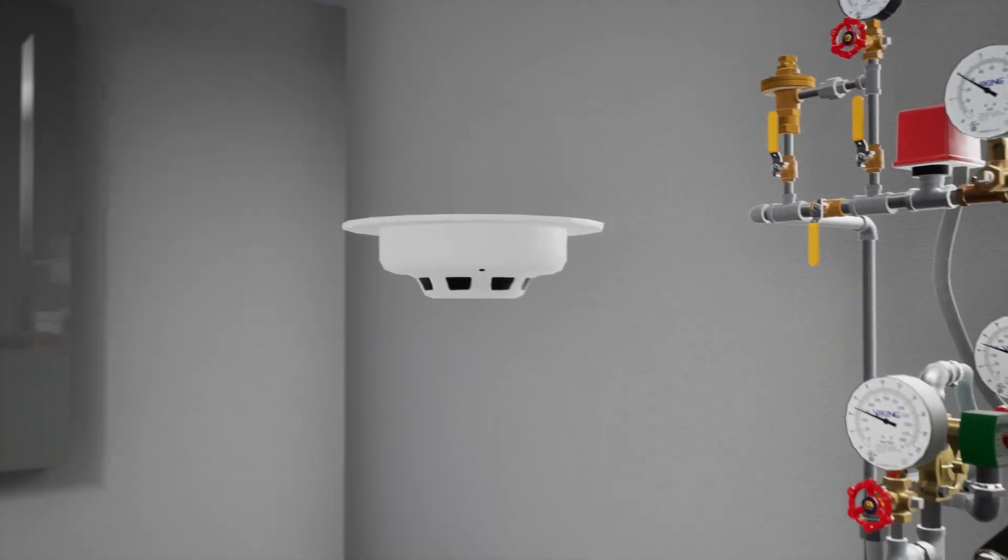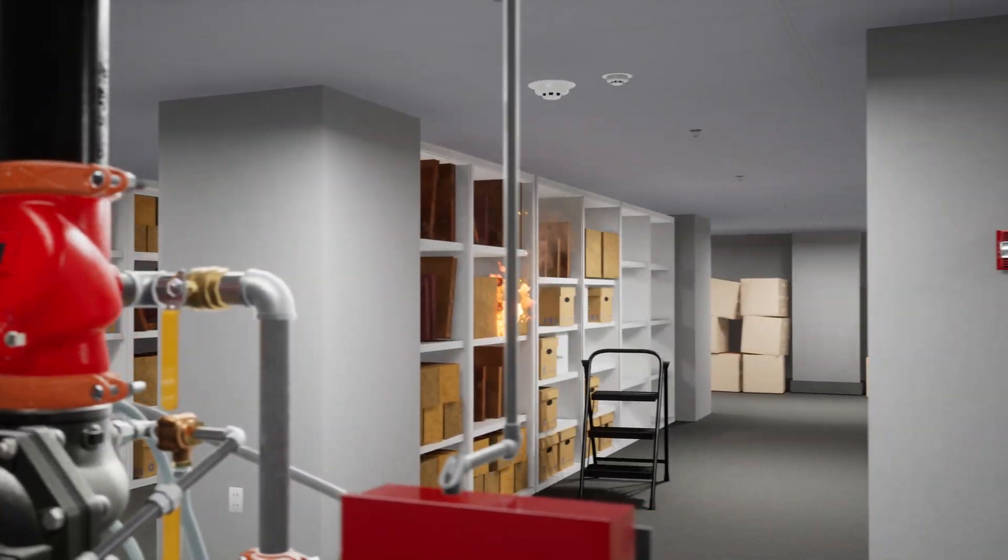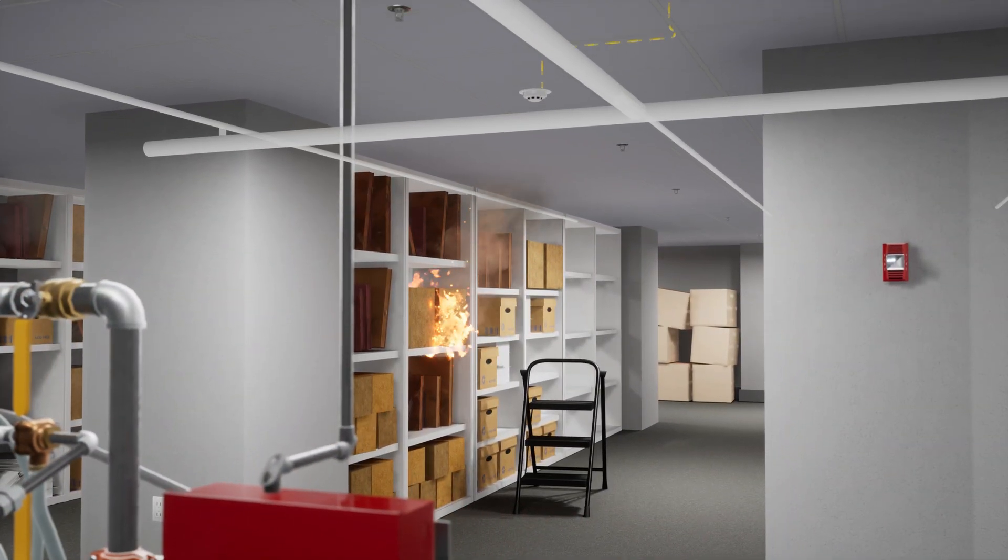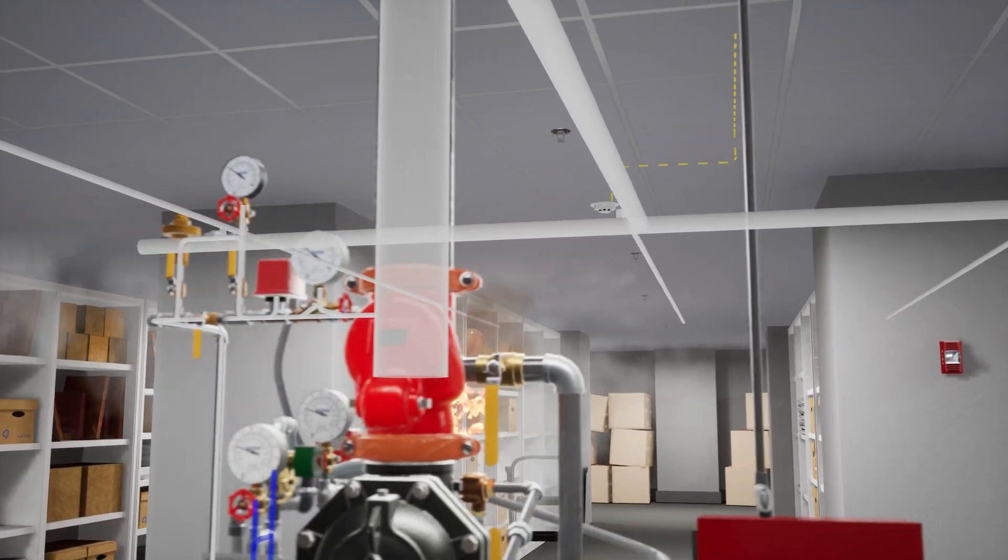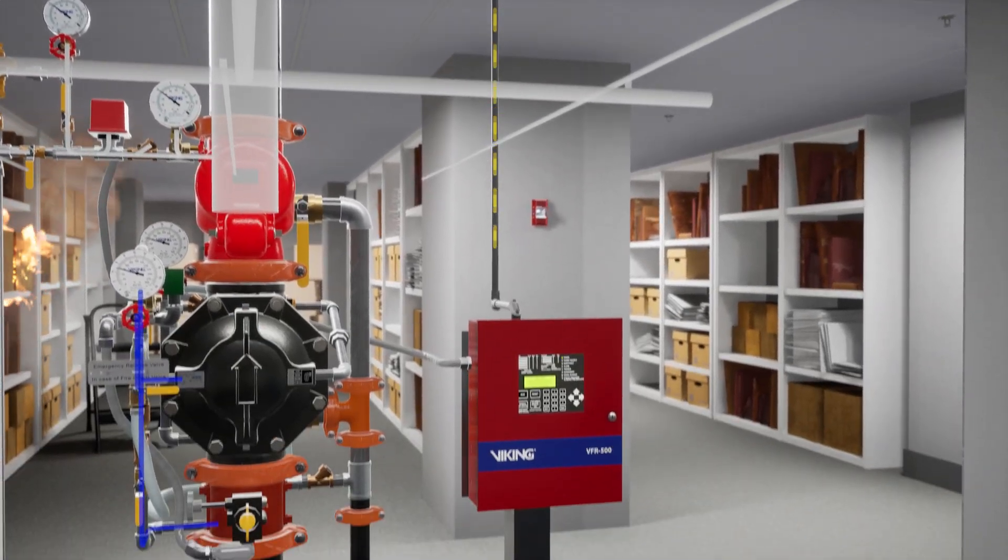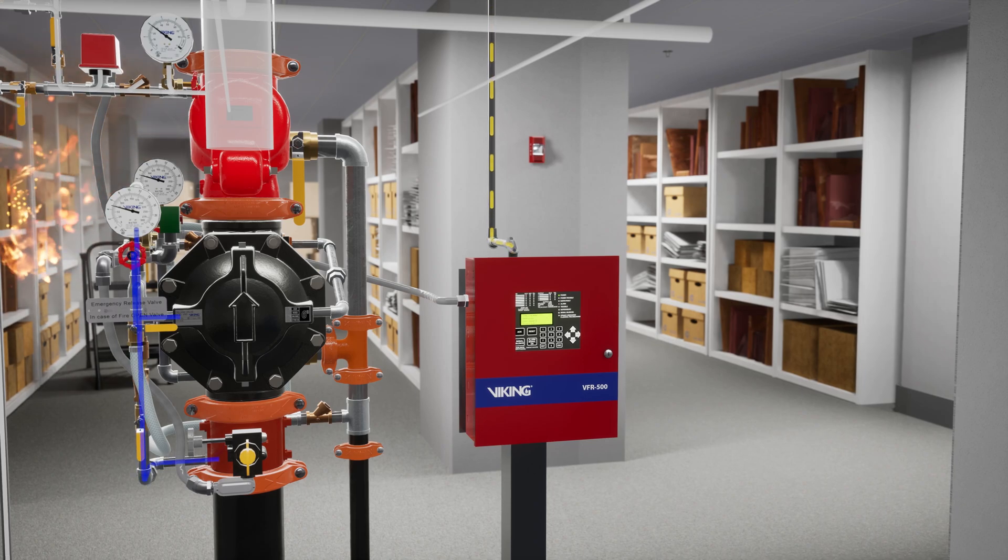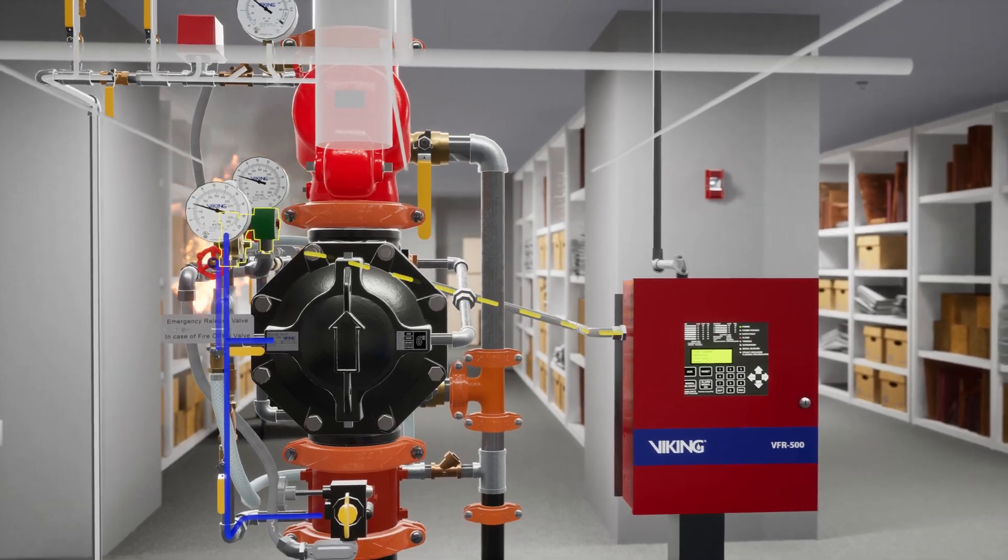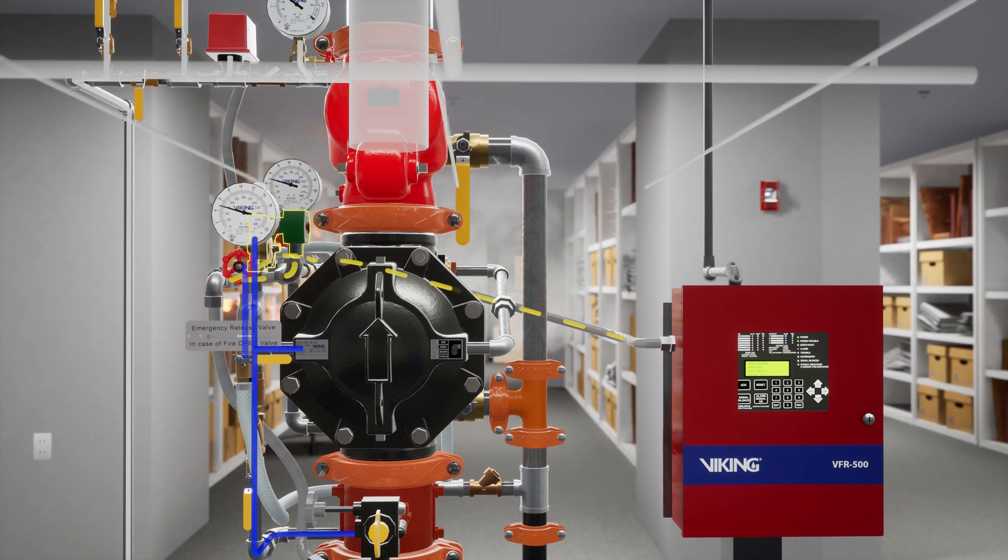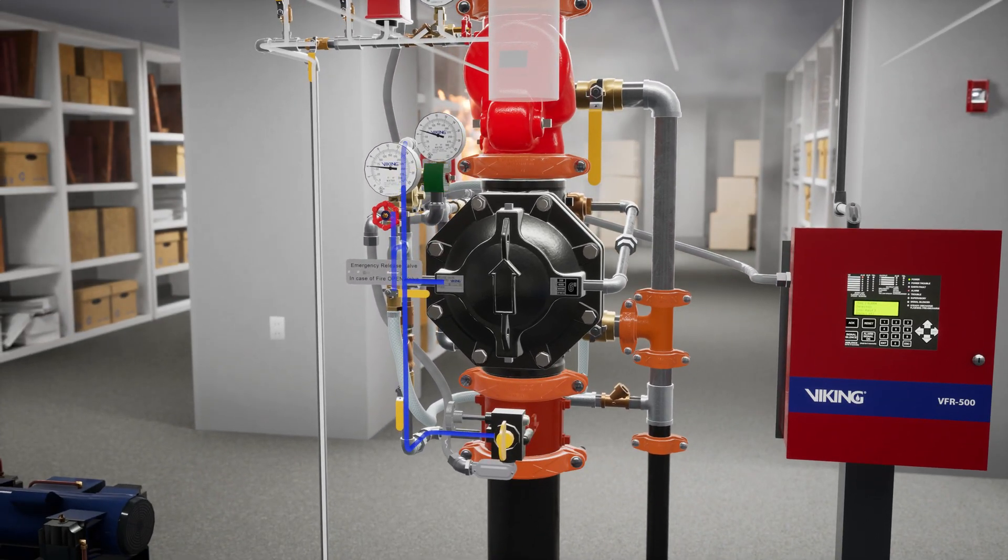The electric detection devices in this scenario are smoke detectors. In a scenario where a fire has started and begins to smoke, the smoke detector sends a signal to the VFR 500 release control panel. Once the signal is received, the VFR 500 sends 24 volts of electricity to the normally closed electric solenoid valve and powers it open, releasing water pressure from within the priming chamber of the deluge valve.